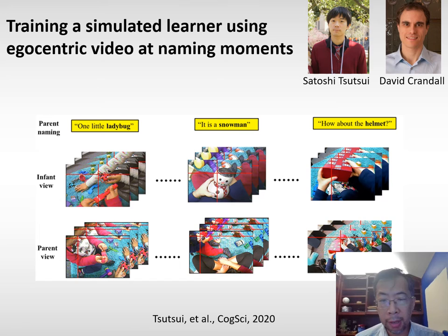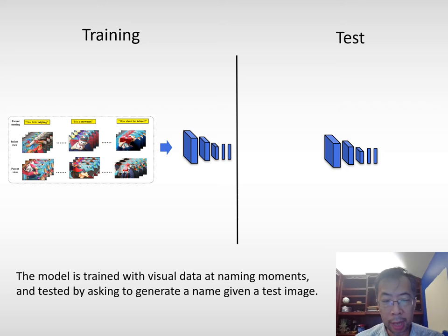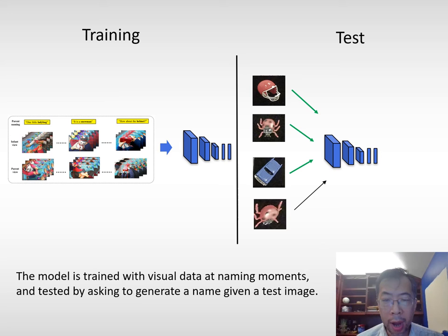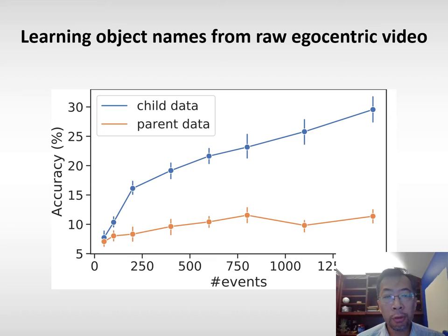To answer the first question, we trained a computational model using egocentric video at the naming moment — work done by Satoshi, a graduate student at Indiana, and David Crandall, a collaborator on this project. We extracted image frames at the naming moment and used those frames as training data. We then tested the model by providing a query image and asking it to produce a name. If the model produced the correct target name, we counted it as correct; otherwise incorrect. For example, the input image might be a ladybug, but the model produces the wrong name, helmet.